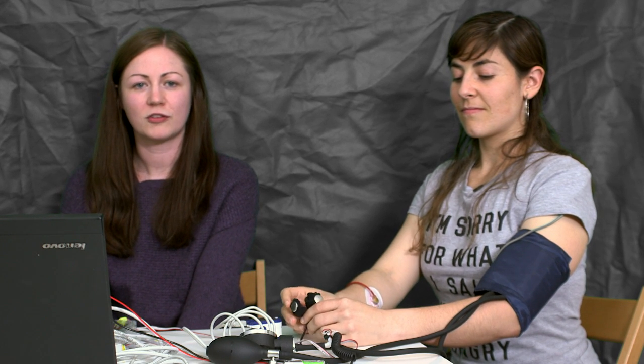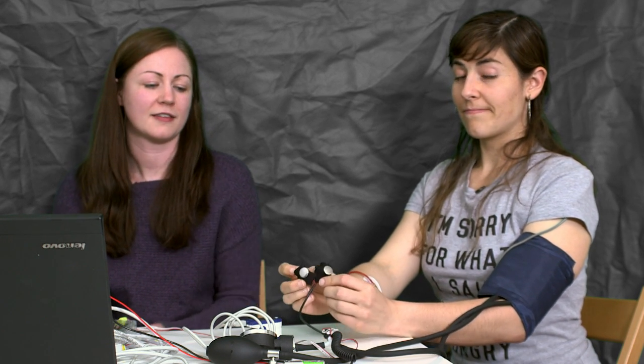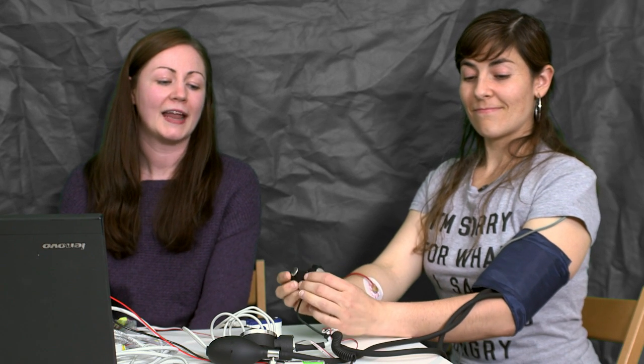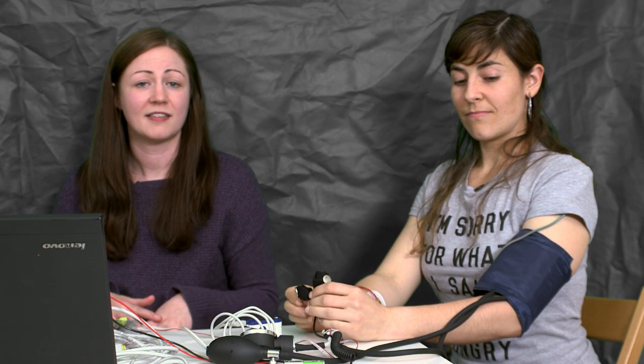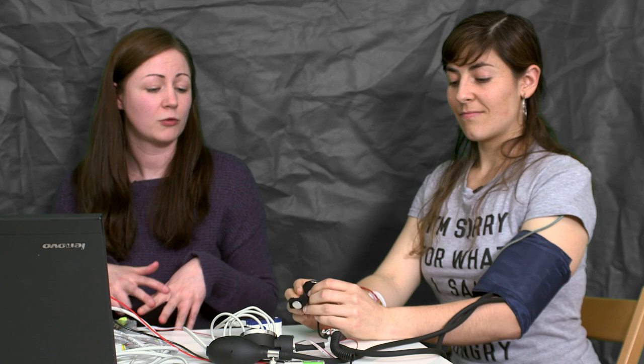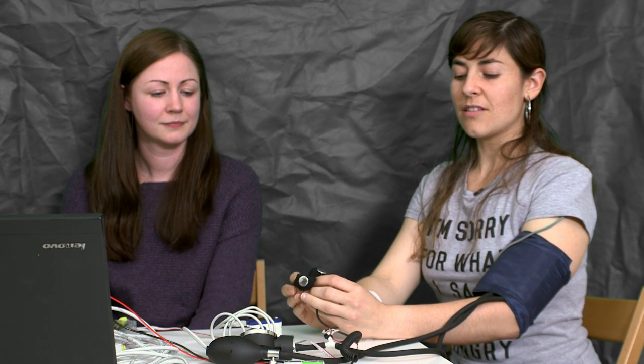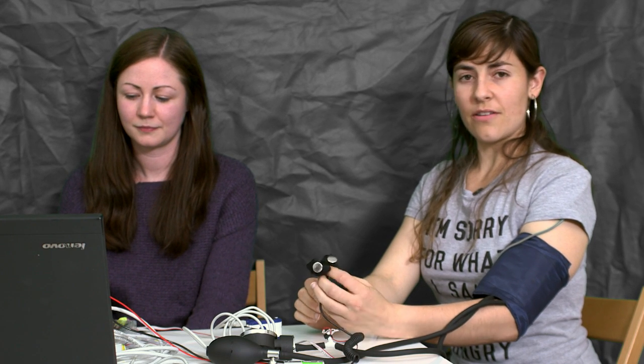So to measure skin conductance, we just use two dry electrodes, as Ali is showing you now. And we just apply those to the skin and simply measure the conductance between those two electrodes. Together with a 10 mega ohm resistance, we have a classical voltage divider.